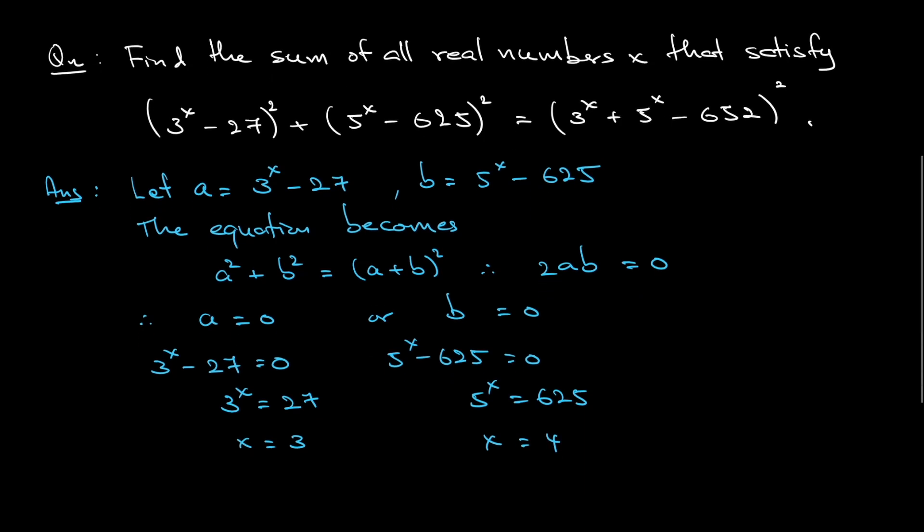We can see that the possible values of x are 3 and 4. Hence, to answer the question, the sum of all the real numbers x is 3 + 4, and that will give you 7.